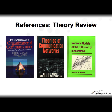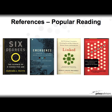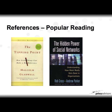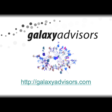Theory books include Monge and Contractor, who take you through a number of multi-level, multi-theory analyses from the last several decades, and Tom Valente's 'Network Models of the Diffusion of Innovations,' which follows up on Everett Rogers' work. For popular reading: 'Six Degrees,' 'Nexus,' 'The Tipping Point' by Malcolm Gladwell, and 'The Hidden Power of Social Networks' by Bob Cross and Andrew Parker. I hope this provides you some basics of social network analysis — the terminology, some references, and professional associations. Welcome to the world of social network analysis.